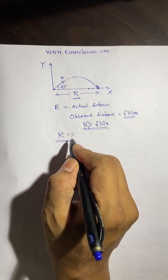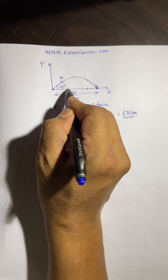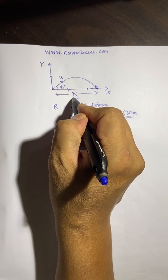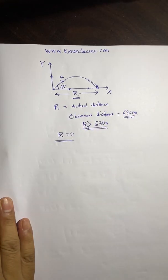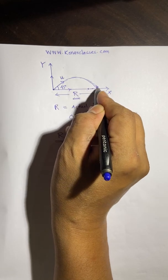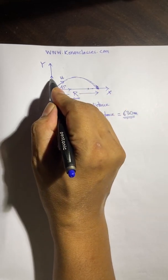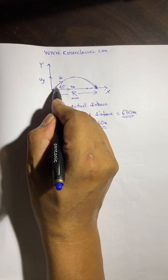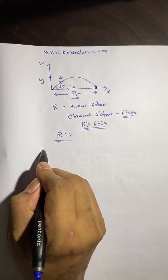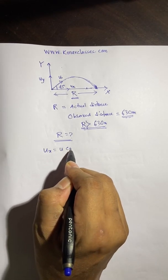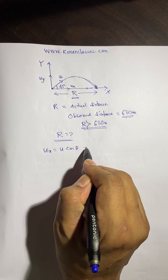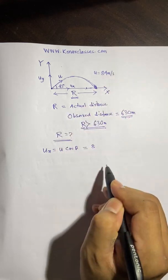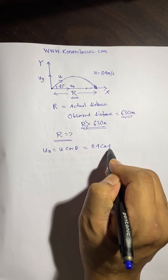To get the value of R, we need to take the component of velocity in the horizontal direction and also in the vertical direction. Whenever a particle is moving in projectile motion, you have to find the components. Here, ux is the horizontal component, so ux = u·cosθ. Since u is given as 84 meters per second, ux = 84·cos45°.